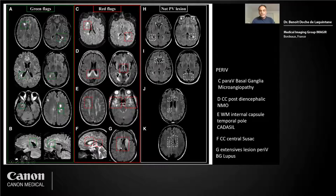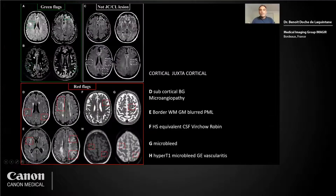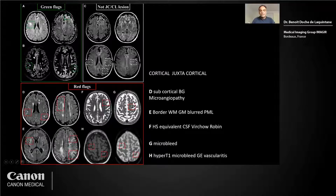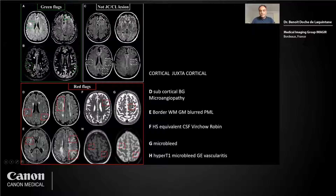Another example for juxtacortical lesions: the green flag we've seen is U-fiber positive with DIR, but on the red flags it's microangiopathy — subcortical and basal ganglia. In PML, you have a lesion at the border of white and gray matter, blurred, with anomaly in diffusion and at the beginning no enhancement. Here is an example of microbleed, and an angiomatous principle of microbleed which is hyperintense on T1. There is no susceptibility imaging here but it could have been better identified with that.